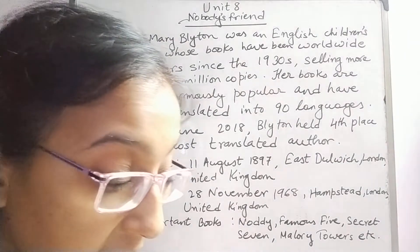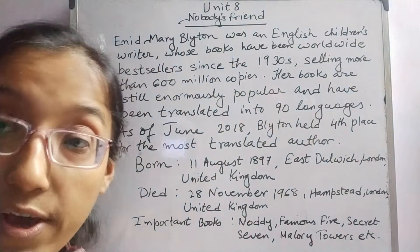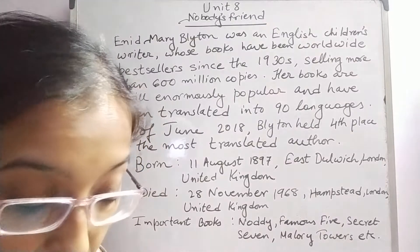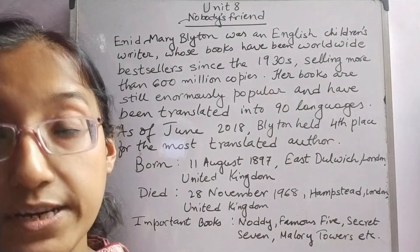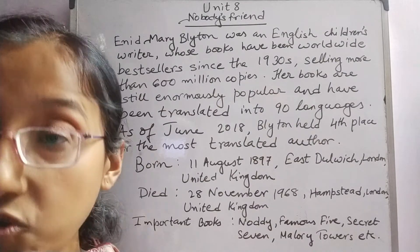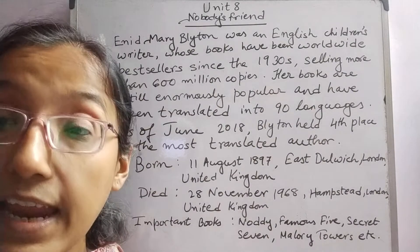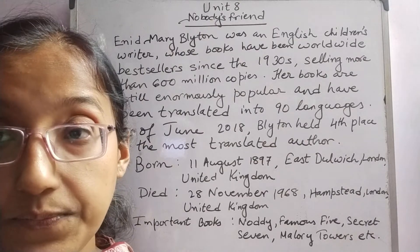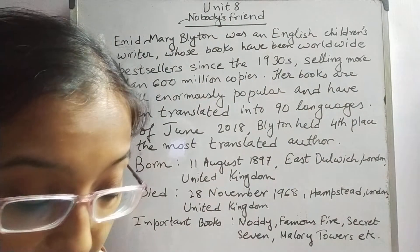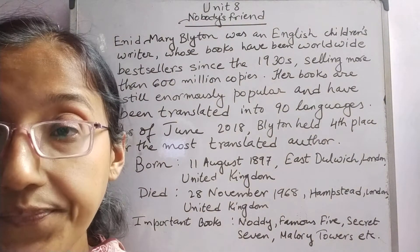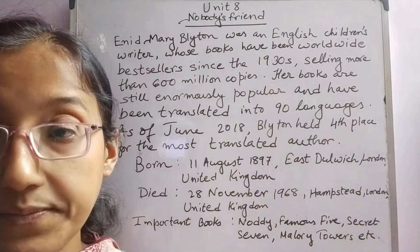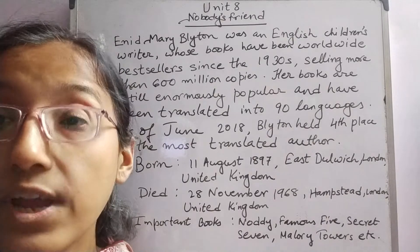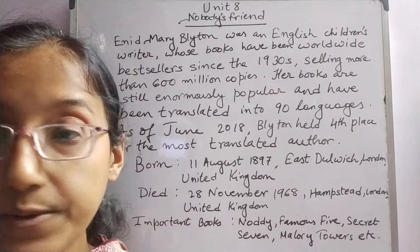In the next stanza, we come across a boy. 'He had some toffee and ate every bit.' This boy owns some toffee and ate all of it without sharing with his friends. 'He had a tricycle he wouldn't lend.' He owns a tricycle, and you know, students, it is not possible for everybody to own a tricycle or a bicycle.